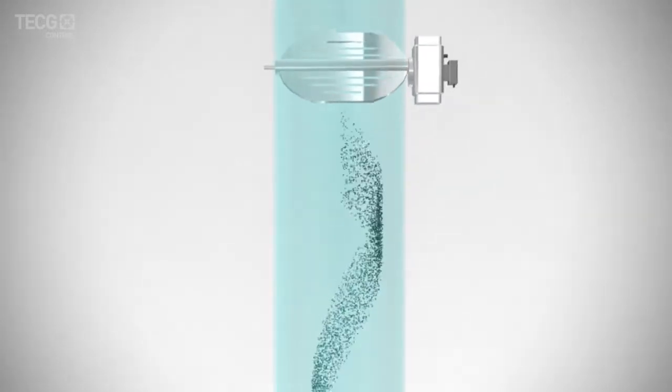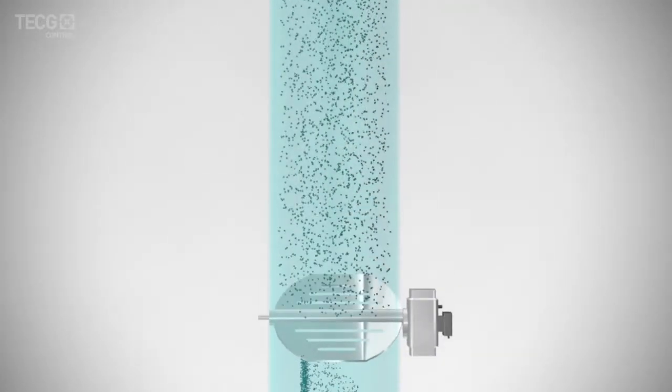The coal balancing valve ensures homogenous coal flow, thus reducing the coal roping effect and achieving coal flow balancing.